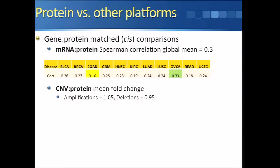When we compared copy number variations with protein, we found that on average amplifications resulted in only a 5% increase in protein levels, whereas deletions resulted in only a 5% decrease in protein expression levels. There is a caveat here: this may be due to the large number of passenger amplifications and deletions we often see in copy number data, which might be diluting the results.